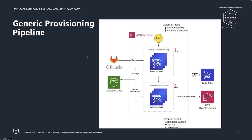Moving forward, we're going to look into the architecture of our application provisioning pipeline. As you saw in the previous videos, developers can choose a boilerplate from a Backstage software catalog. As the main step for every Backstage boilerplate, we call this Step Function State Machine the provisioning pipeline.